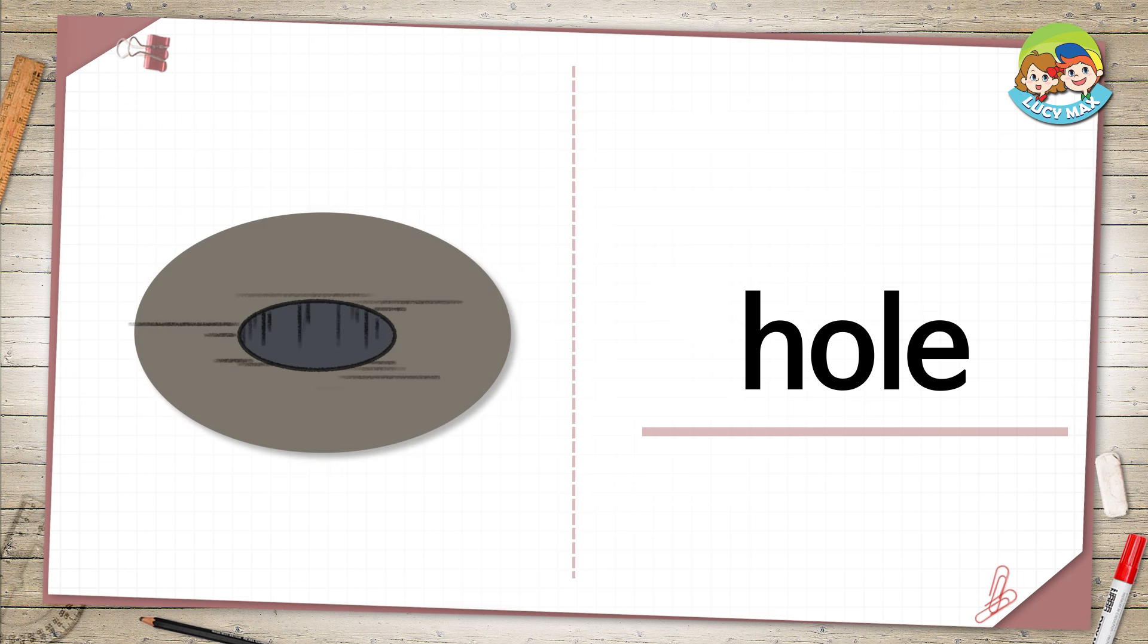Hole. A hole is a deep and hollow place. In the picture, the darker color is a hole. The brown color is ground.